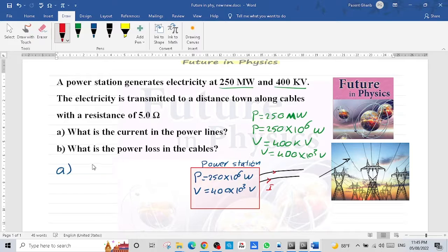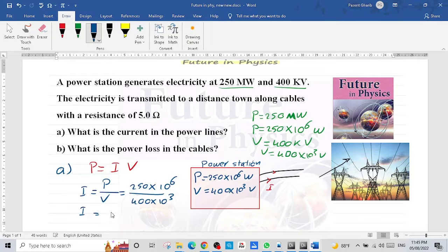We have P equals I times V. So to get I, we use the formula P equals I times V. So the current produced in the power station equals the power divided by the voltage, equals 250 multiply 10 power 6 divided by 400 multiply 10 power 3. The answer of this value by using the calculator is 625 ampere.